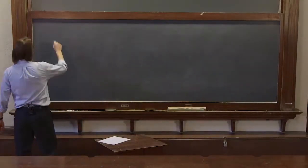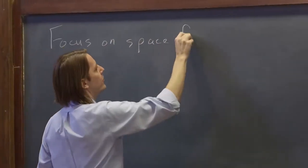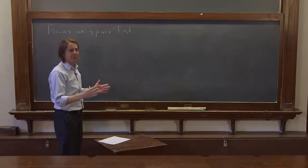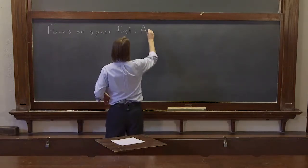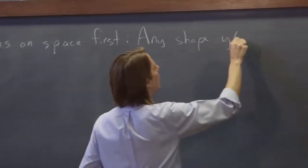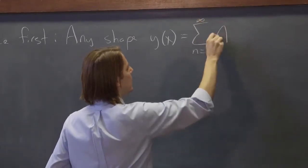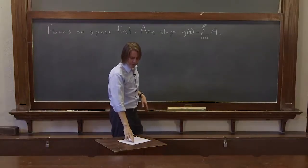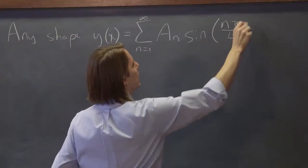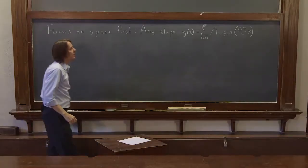Let's see if we can get anywhere with Joe Fourier's idea. Let's focus on space first. Rather than trying to do this for space and time, first let's just see, can we make any shape, any shape y of x, can we say that's equal to the sum of n equals 1 to infinity of some amplitudes A_n sine n pi over l x. So we're just writing it without the time part to see if that can make any sense.